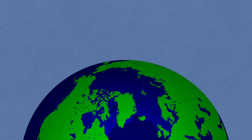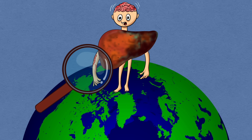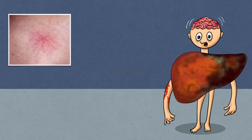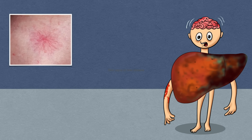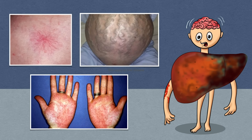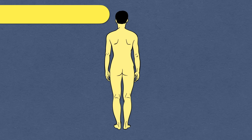Chronic liver disease is one of the leading causes of major health problems worldwide. Very often, skin manifestations are the first sign of liver disease. Few skin lesions are typically seen in liver disease, but some skin changes are general and can be seen in many other diseases. Let's discuss the signs one by one.